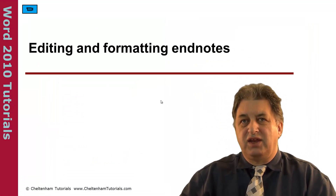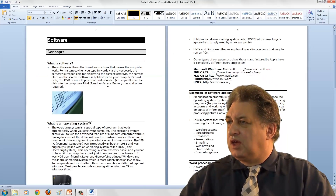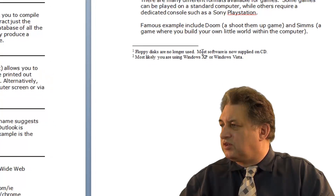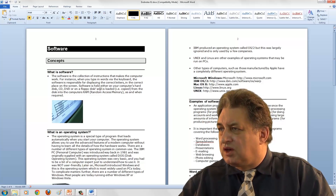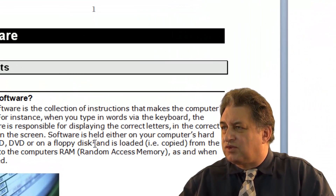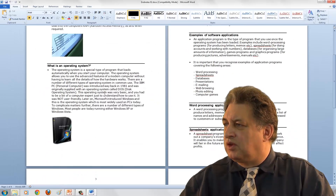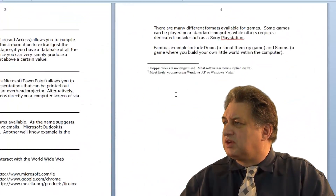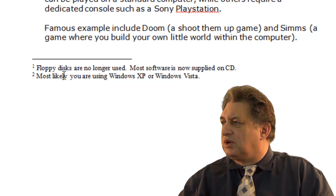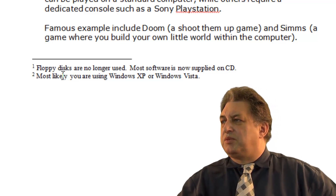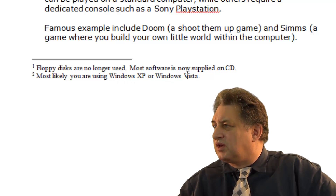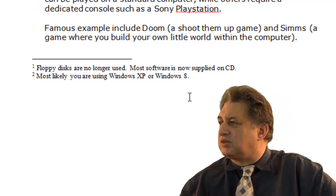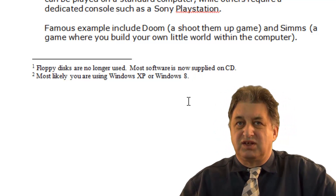Editing and Formatting Endnotes. Here we have a document. If we go towards the end, those are our Endnotes, and they relate back to items within the main document. Just after the word floppy disk we have the number 1. If we scroll down to the Endnotes and want to make changes, it couldn't be easier. Let's say we want to change the second one — updating 'Windows Vista' to 'Windows 8'. You just edit it like normal text.